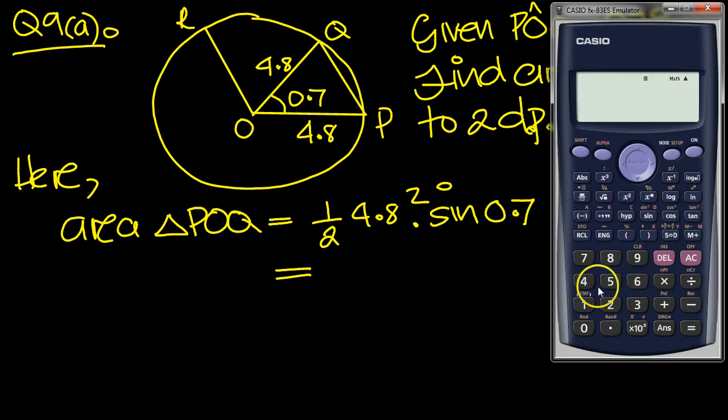So it's 0.5 times 4.8 squared times the sine of 0.7. And we need to be in radians mode. So let's get in radians mode then, which is number 4 on this calculator.